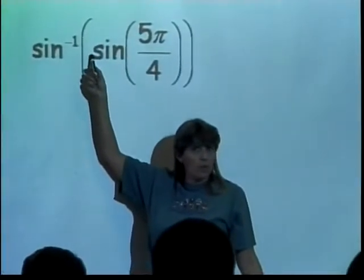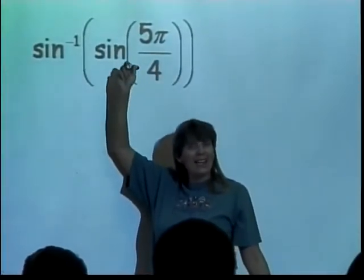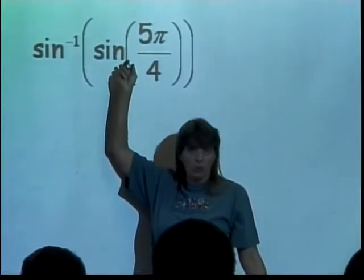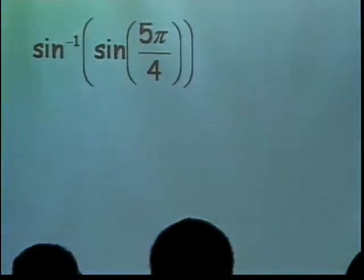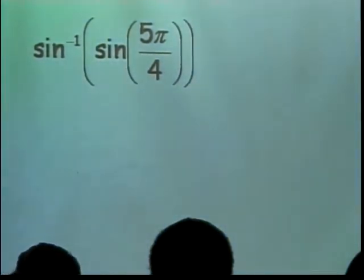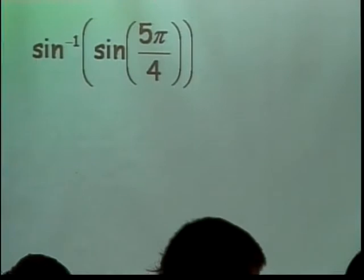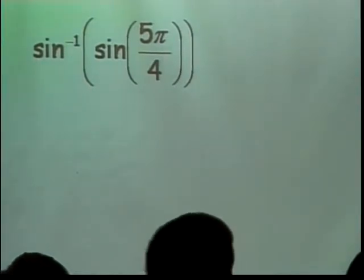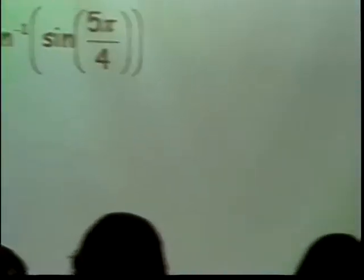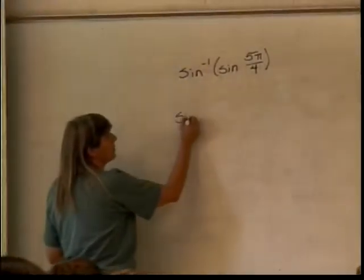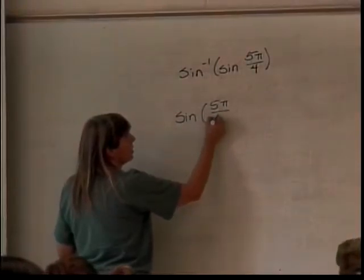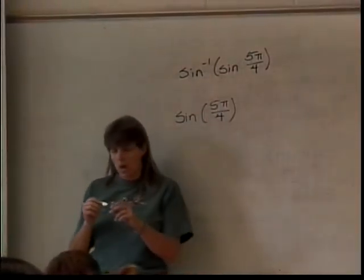So I have to figure out what I am going to get out. When you have them and the inverse is on the outside with the regular function on the inside, you may or may not get out what you started with because of the restriction in the domains, which messed up the range. So I have sine inverse of the sine of 5 pi over 4. So I start at the beginning. Inside, I have 5 pi over 4. What is the sine of 5 pi over 4?